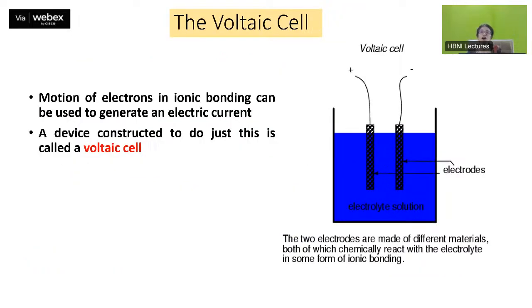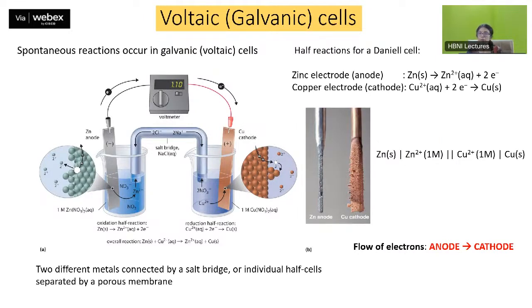A voltaic cell uses the motion of electrons in ionic bonding to generate an electric current. A device constructed to do this is known as a voltaic cell, also called a galvanic cell. It has two electrodes made of two different materials — both chemically reacting with the electrolyte. In the classic example, you have a zinc anode and a copper cathode: zinc dissolves into solution as zinc ions, while copper deposits on the copper cathode. Electrons flow from the anode to the cathode. The zinc anode depletes and copper deposits on the copper cathode where reduction takes place.